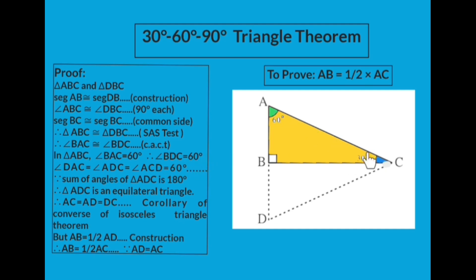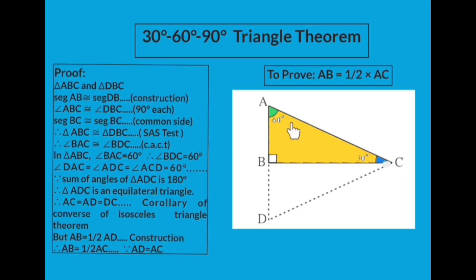Now, in the larger triangle ACD, two angles — angle A and angle D — are each 60 degrees. Since the sum of all angles of a triangle is 180 degrees, and angle A and angle D account for 120 degrees, the remaining angle ACD must also be 60 degrees. Therefore, triangle ACD is an equilateral triangle.